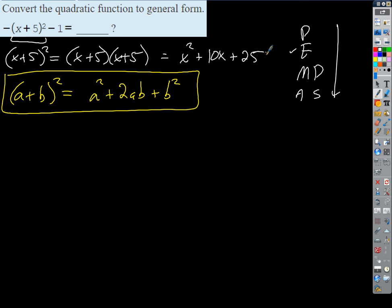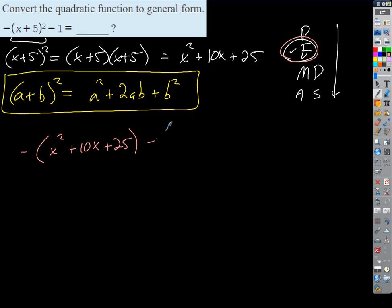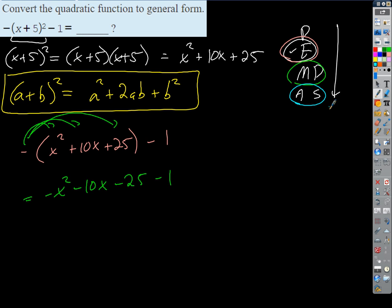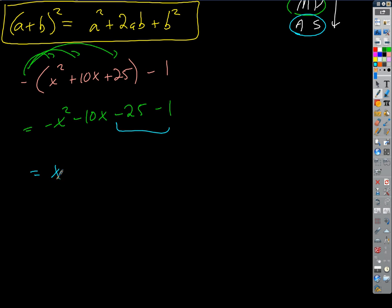So the first step leaves us with negative times x squared plus 10x plus 25, minus 4. Next we distribute the negative: negative x squared minus 10x minus 25. Then subtraction gives us minus 1. Combining, we get negative x squared minus 10x minus 26. That's our answer.